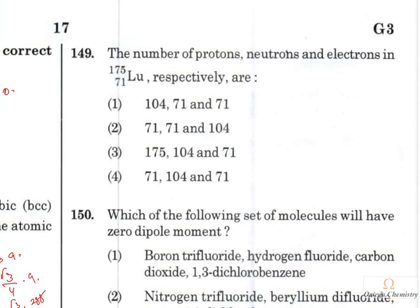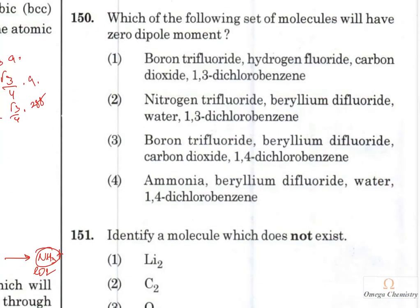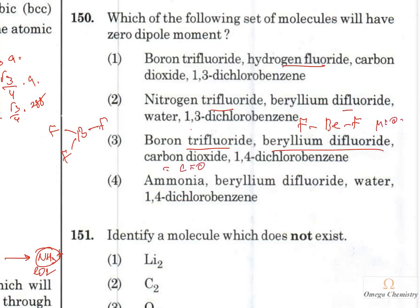Question 149: For ¹⁷⁵Lutetium (atomic number 71), there are 71 protons, 71 electrons, and 175 − 71 = 104 neutrons. Option 4 is the right answer. Question 150: Which set of molecules has zero dipole moment? Boron trifluoride (planar, μ = 0), beryllium difluoride (linear, μ = 0), carbon dioxide (linear, μ = 0), and 1,4-dichlorobenzene (μ = 0). Option 3 is the answer.